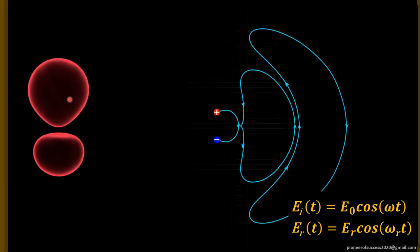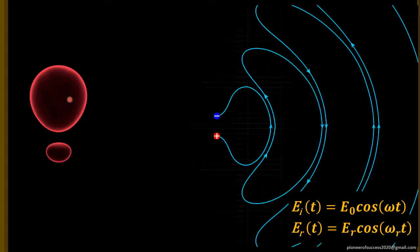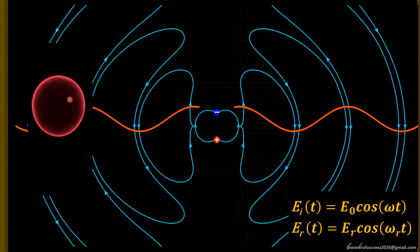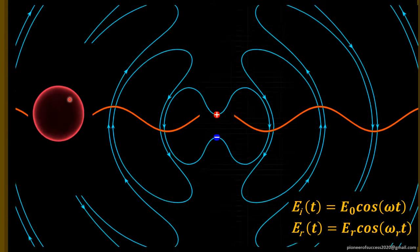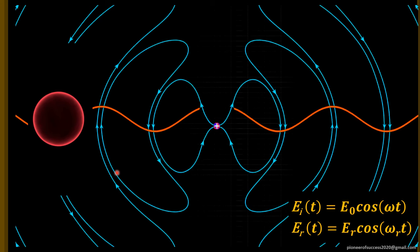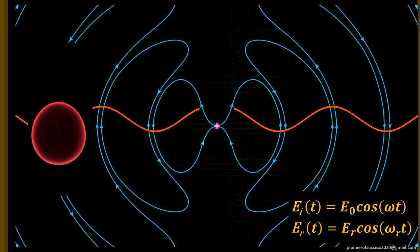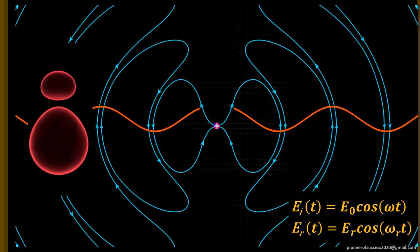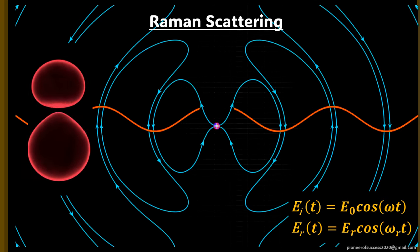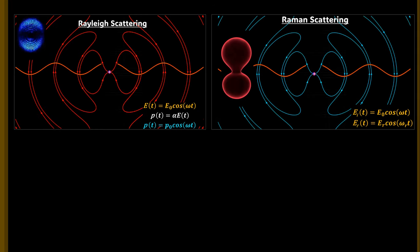However, when molecules get strongly polarized in the presence of the external electric field such that they shift to a new virtual energy state, the molecule re-radiates an electromagnetic field with a different energy compared to that of the incident electric field. This type of scattering is termed inelastic scattering, also called Raman scattering.